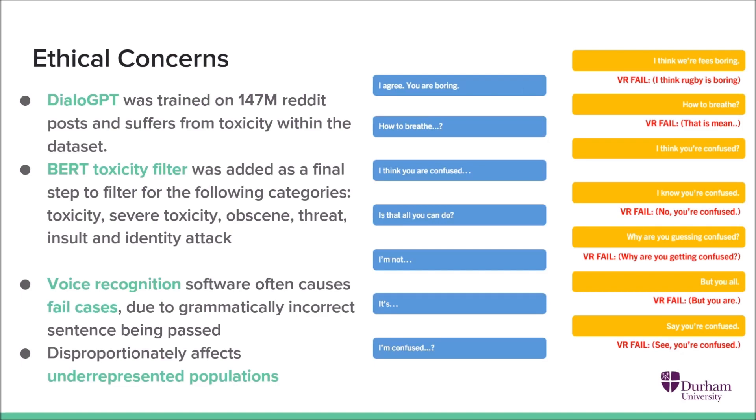The biggest failure of Jill that we saw was the voice recognition. And you can see this, an example of a conversation where this frequently occurs on the right. And this is because of the voice recognition software not being trained on all populations, people. And this failure disproportionately affects underrepresented populations and is an inherent problem.